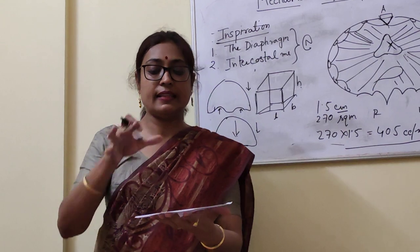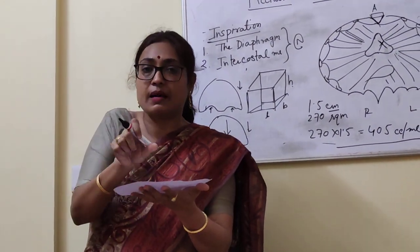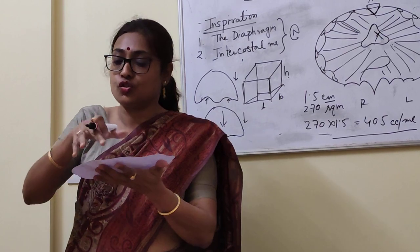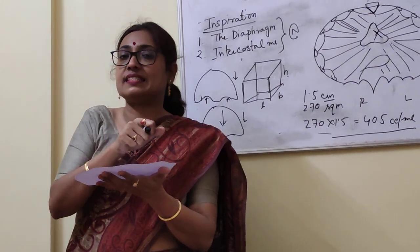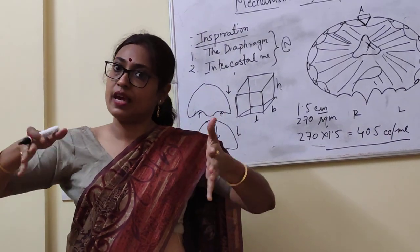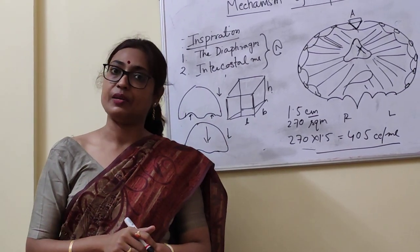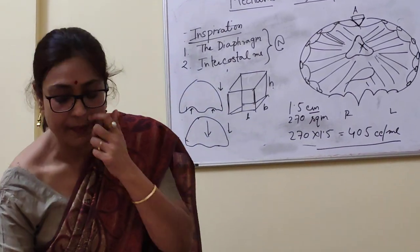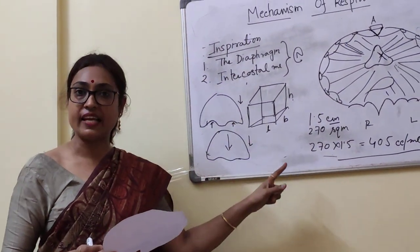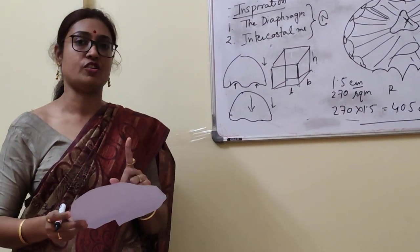Then the central portion becomes fixed and the peripheral portion starts contracting. In the peripheral portion, the structures are the ribs. When the peripheral part starts contracting, the ribs go outward, increasing the transverse as well as the anteroposterior diameter. So the diaphragm functions by increasing all three: height, transverse, and anteroposterior diameter.